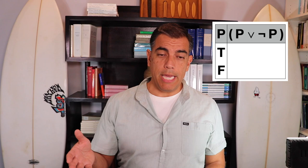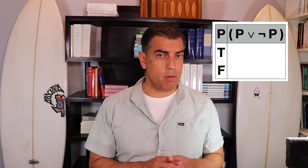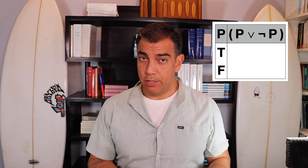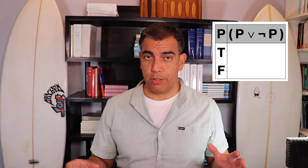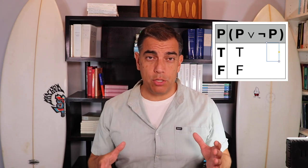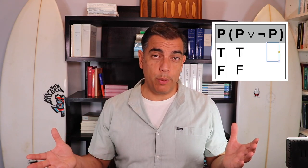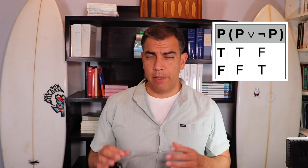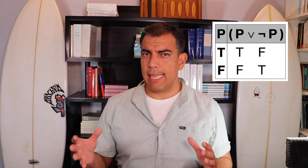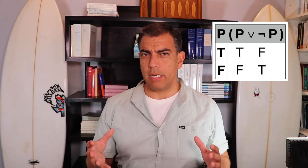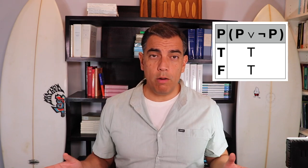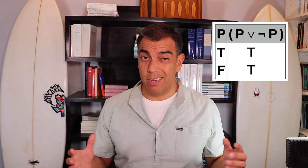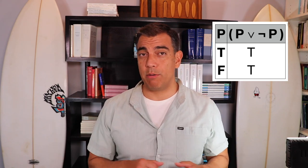Here's an example of a tautology using our truth tables: P or not P. That's just always going to be true. It's built into our system — the law of excluded middle — that this is going to come out true no matter what, purely based on its structure. You assign truth values to the simple propositions, negate that second P, and the disjunction is true when at least one disjunct is true. Whether P is true or P is false, this is always a true proposition. That is a tautology.